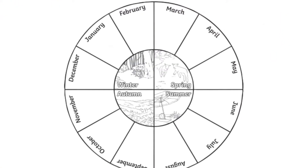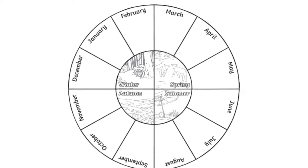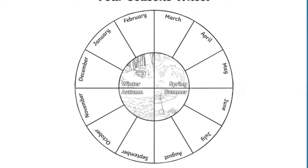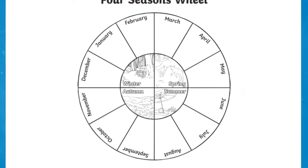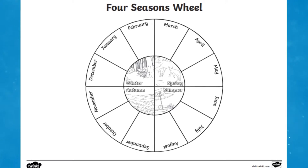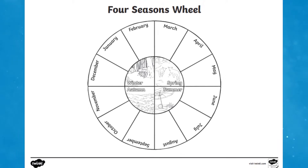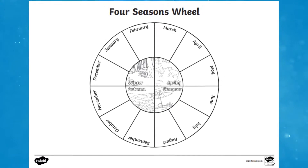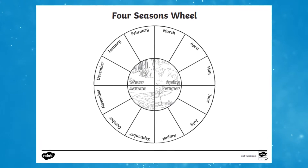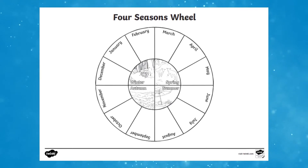Our Four Seasons Wheel is a great way for learners to track the link between months and seasons. In the space for each month you could get learners to write or draw a summary of what the weather has been like that month.